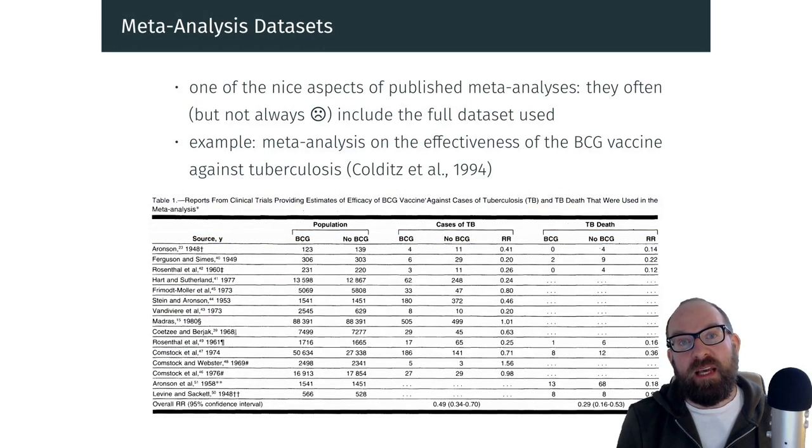One of the nice aspects of meta-analyses is that they often include the full dataset that was used for the analysis. For example, down here you see Table 1 from the meta-analysis by Kolditz and colleagues on the effectiveness of the BCG vaccine against tuberculosis.